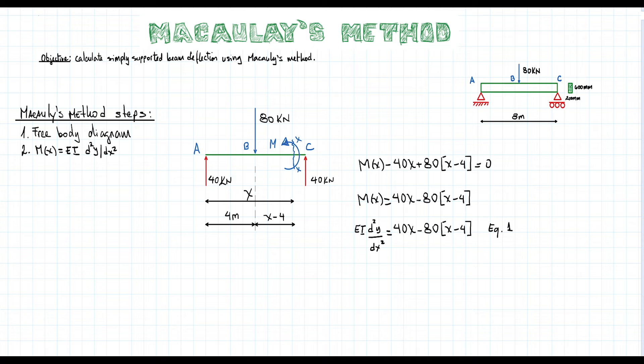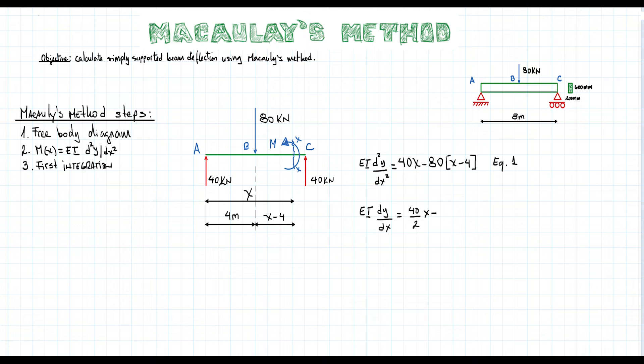Then in the third step, we will integrate equation 1 to get the rotations along the beam. Remember that from the integration process, we will get an integration constant. We will name this constant C_θ to refer that it comes from the rotation formula. Let's call this equation 2. Notice here the integration rules followed by the Macaulay brackets.